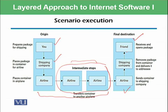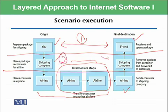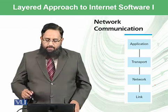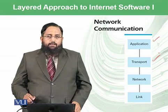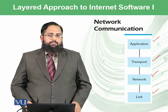We have three layers present in this diagram. The first layer is the users — you and your friend. The second layer is the shipping company, at your end or at your friend's end. The third layer is the airline. These three layers were involved to send your packet from one location to another. Similarly, in network communication we have four layers: the application layer, then the transport layer, then the network layer, and the fourth is the link layer — and they work similarly to what we discussed.